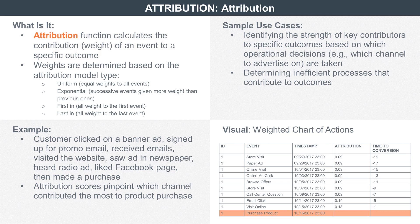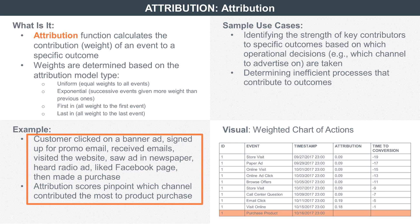Attribution is a way to determine the causal impact of a specific activity on a final outcome. For example, let's say a customer first sees an ad in a newspaper that spurs her to go online and do some research on the company that sells the product. She then goes to the store to check out the product,